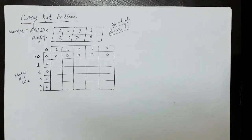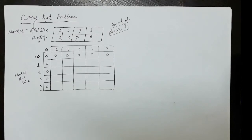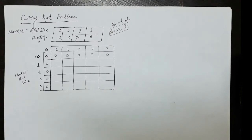In this lecture we will be discussing the cutting rod problem. It is about a hardware shop where rods of various sizes are sold. A rod of size 1 inch costs 10 rupees, and a 2-inch rod may cost 20 rupees or more — it depends on demand. If the two-inch rod has higher demand, its price may be 25 or 30 rupees; otherwise it could be 15 rupees. Rod sizes with larger demand are costlier, and not necessarily in the same proportion as smaller pieces.